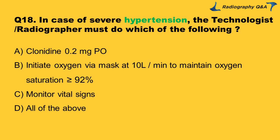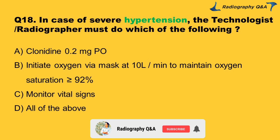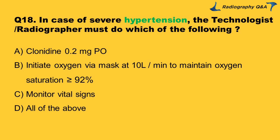Question 18: In case of severe hypertension, the technologist/radiographer must do which of the following? Option A: clonidine 0.2 mg orally. Option B: initiate oxygen via mask at 10 L/min to maintain oxygen saturation ≥92%. Option C: monitor vital signs. Option D: all of the above. Right answer is Option D.